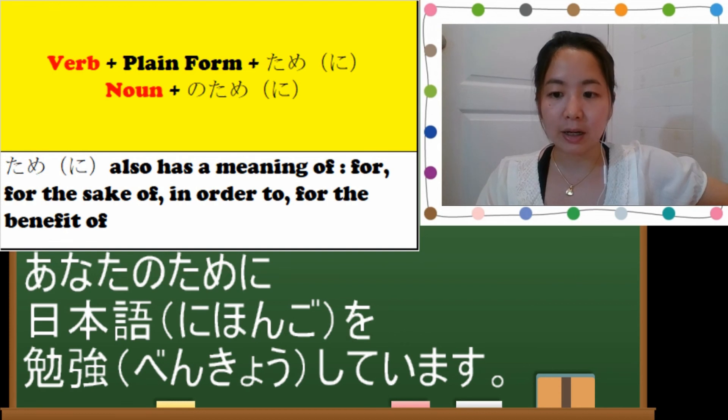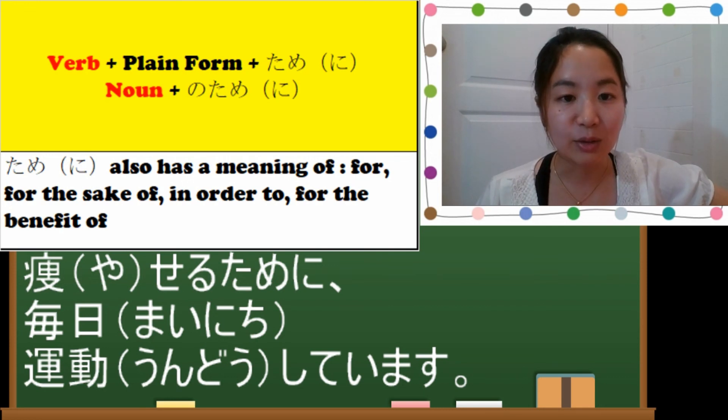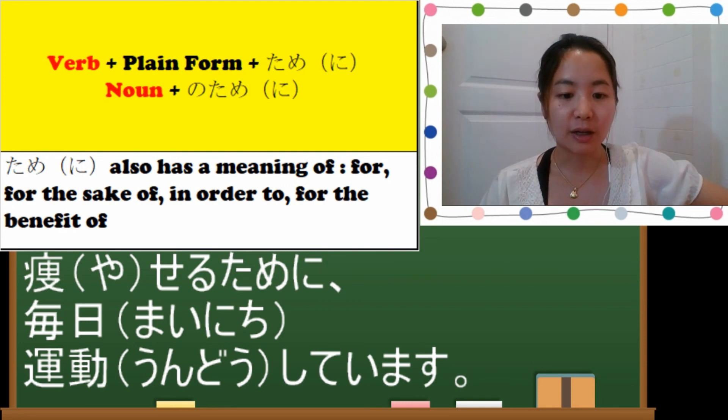After a verb it will become plain form plus tame-ni. So if I say yaseru tame-ni mainichi undou shite imasu. In order to lose weight, I do sports every day. Yasemasu, yaseru is to lose weight. So these are the two different meanings of no tame-ni and no tame.